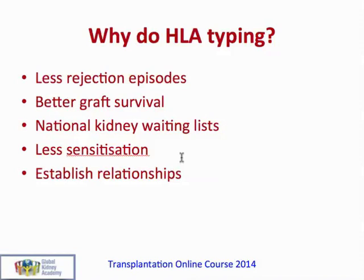HLA matching also ensures that when someone has a transplant they become less sensitized, because there are fewer mismatches. If a transplant is highly mismatched with the recipient, when it is rejected the recipient can develop numerous antibodies against all the mismatched antigens. By ensuring kidney transplants are well matched, you reduce sensitization. HLA typing is also used in some labs to establish relationships between siblings and between parents and children because of the necessity to share haplotypes.